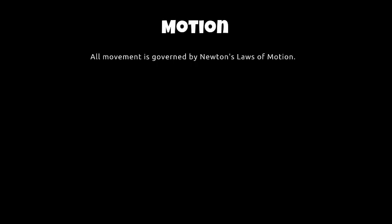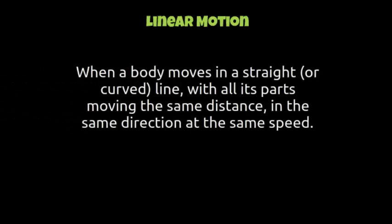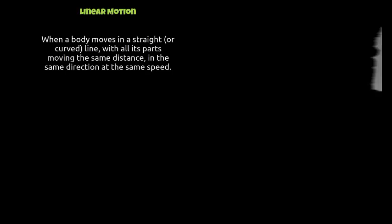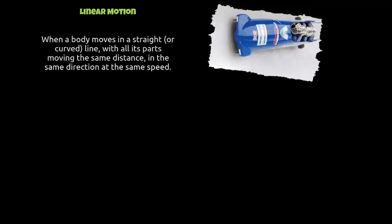If we kick off with motion, essentially Isaac Newton created some laws that defined motion and how motion works. We have what's called linear motion — this is just a general term — and this is when a body moves in a straight or curved line with all its parts moving the same distance in the same direction at the same speed. A good example of this is a bobsled, which runs in a straight or curved line with everybody inside it moving at the same speed at the same time.